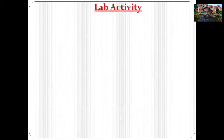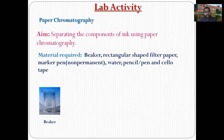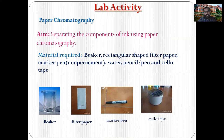Lab activity: Separating the components of ink using paper chromatography. Materials required: beaker, rectangular-shaped filter paper, marker pen, water, pencil or pen, and cello tape. These simple materials are all that is needed to perform the paper chromatography lab activity.